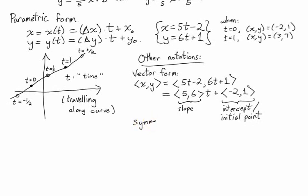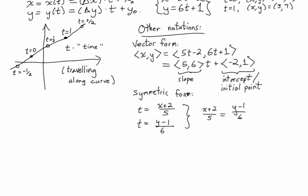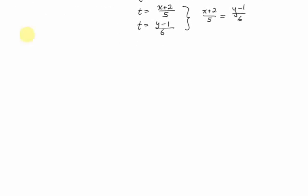In addition to vector form, you could in fact eliminate the parameter t and write the equation in something called symmetric form. The idea behind symmetric form is once you have your equations for x and y in terms of t, solve those equations for t. So here, t is x plus 2 over 5, and t is y minus 1 divided by 6. Since they're both equal to t, they are both equal to each other. And so we have x plus 2 over 5 equals y minus 1 over 6. Again, it represents the same line, it's just written in a different way, this way eliminating the parameter t altogether. Now the advantage to writing the equation of a line in this form, whether it be parametric, or vector, or symmetric, is all of those forms generalize to three-dimensional space in a straightforward way.